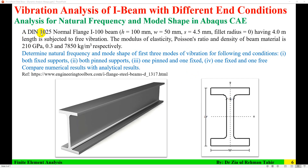The problem is a DIN 1025 normal flange I-100 beam having 4 meter length, subjected to free vibration. Its overall height is 100 millimeter, overall width is 50, and the thickness of both flanges and web is 4.5, with fillet radius of 0. The modulus of elasticity, Poisson's ratio, and density of the beam material are 210 GPa, 0.3, and 7850. Determine the natural frequency and mode shape of the first three modes of vibration.